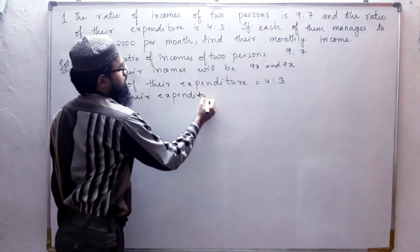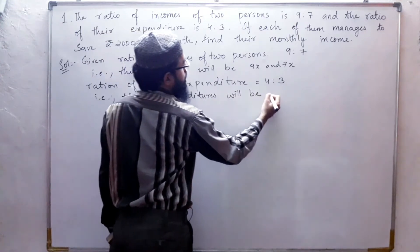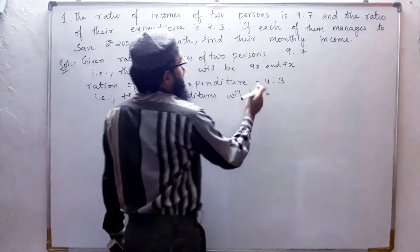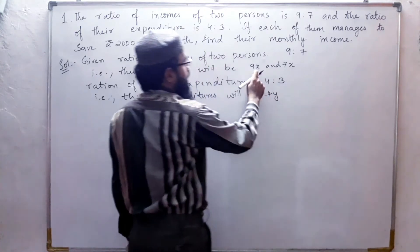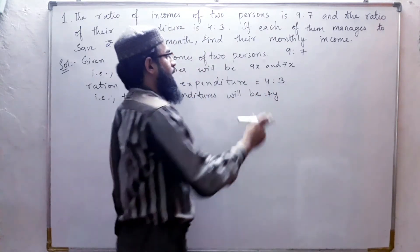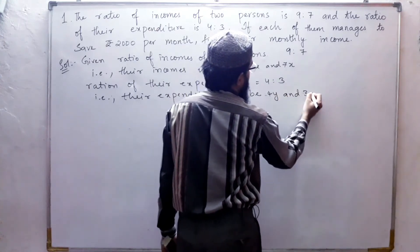Their expenditures will be 4y and 3y. Here we have taken x for income and y for expenditure.